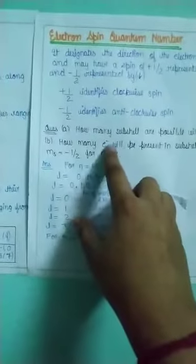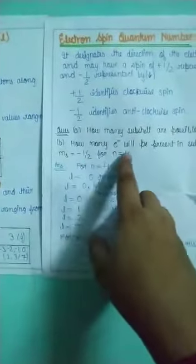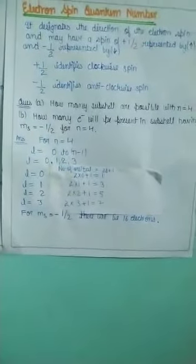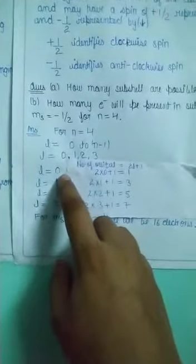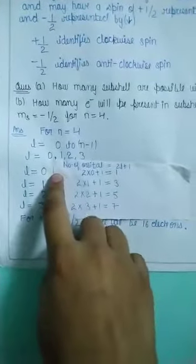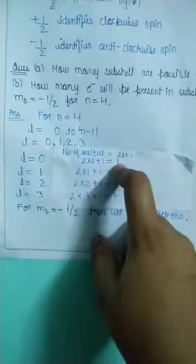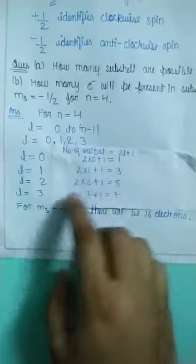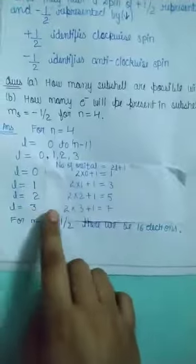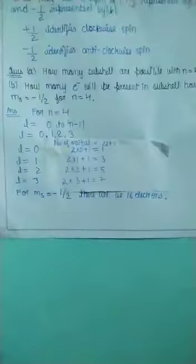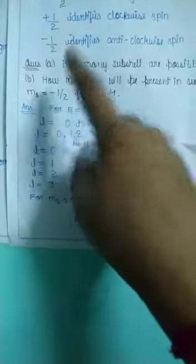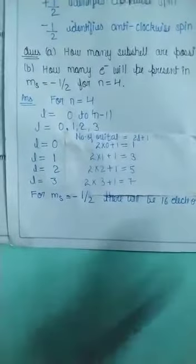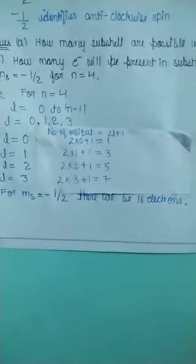Now we calculate how many electrons are present in the subshell having ms = -1/2 for n=4. In the fourth shell, l = 0, 1, 2, 3. For S (l=0): 1 orbital; P (l=1): 3 orbitals; D (l=2): 5 orbitals; F (l=3): 7 orbitals — totaling 16 orbitals. Since each orbital has one electron with downward spin, there are 16 electrons with ms = -1/2. Thank you for watching.